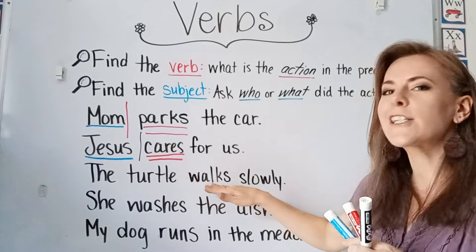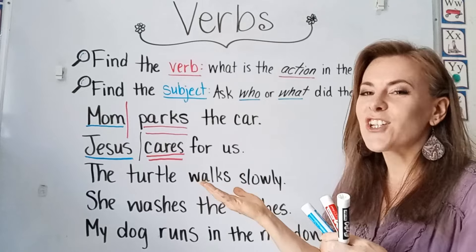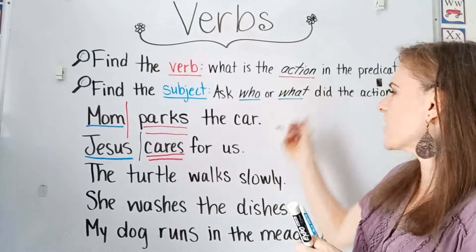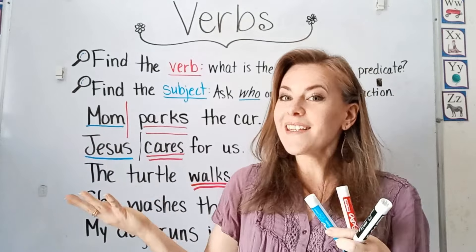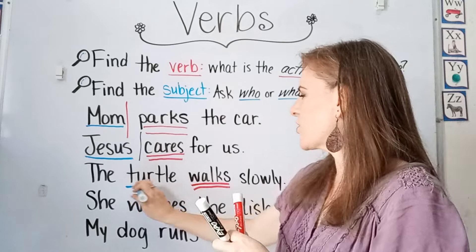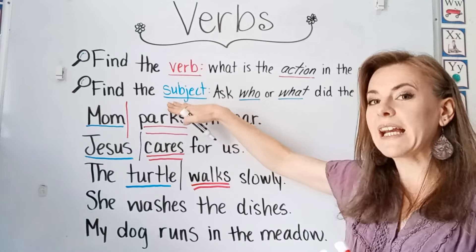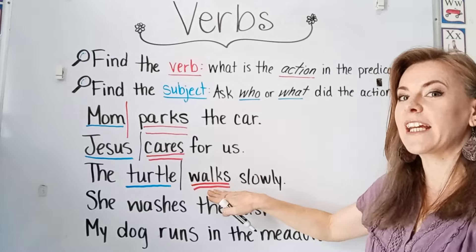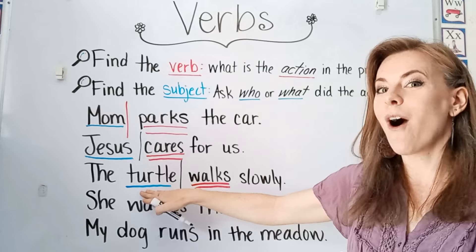The turtle walks slowly. So what is the action in the predicate part of the sentence? Walks. Walks is the action that is being done. And who or what walks slowly? The turtle is what walks slowly. So we know that the turtle is our subject because it answers the question: who or what did that action in the predicate? The action is walks, and the turtle walks slowly.